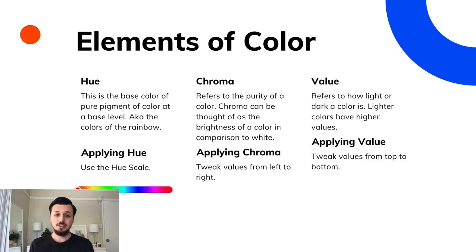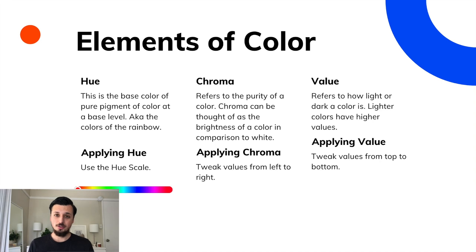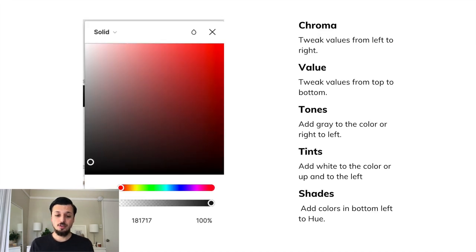First is hue. Hue is the base color of the pure pigment of that color at a base level, also known as the colors of the rainbow. I pulled the hue color from Figma that you can see here below. You'll use the hue scale in order to create the hue. Now chroma refers to the purity of a color. Chroma can be thought of as the brightness of a color in comparison to white. In order to apply chroma, you'll tweak values from left to right when using this scale. To give it brightness, you'll want to tweak it up and to the left.